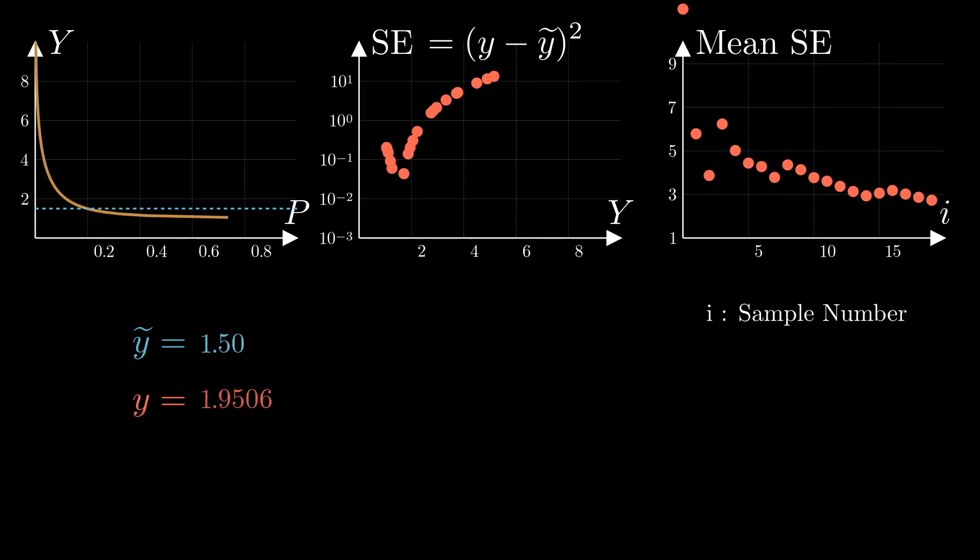That converged value is the expected value of the squared error loss for a given y tilde. What we have done here is nothing but numerically estimating the expected value of our stochastic loss for a given y tilde. Now, we make a new plot of the expected value as a function of y tilde, which will give us the expected error for each decision point y tilde.